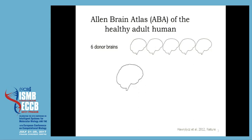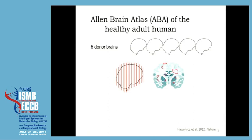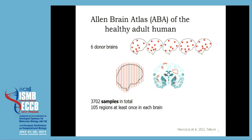For each brain, they sliced it up. In each slice — a coronal section — they took samples: larger parts were cut out with a knife, smaller parts with a laser. In total, they took 3,700 samples from the six brains. The sampling is not the same for each brain — one brain has 300 samples, another has 900 — but there are 105 regions sampled at least once in each of the six brains.